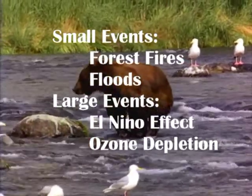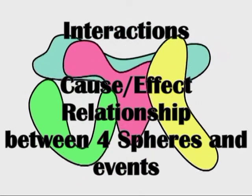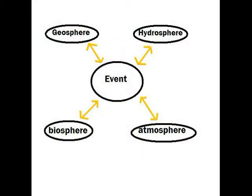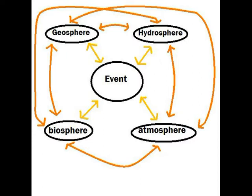The cause-effect relationship of these events is called an interaction. This diagram shows what spheres can contribute to the cause of an event and how the event can in turn affect these spheres. Here is the same diagram but with a few more arrows. These arrows show how the different spheres can interact with one another as a result of an event. Sometimes these interactions between spheres can cause chain reactions, which can in turn lead to another event.